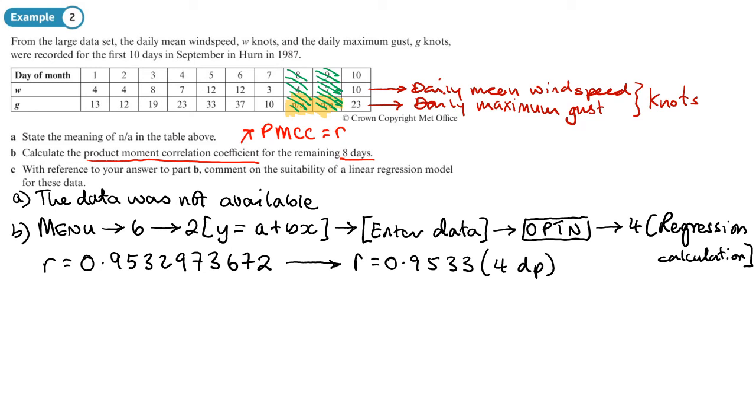And then we can move to part C and part C says, with reference to your answer from part B, which is this answer here, comment on the suitability of the linear regression model for these data. Now, a linear regression model, linear means like a line model, basically, can this be modelled by some sort of straight line? And that would be the case if we have a strong positive or negative correlation. And then the points form almost on a straight line. And here we have a value of R that's very close to one.